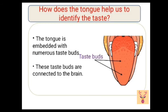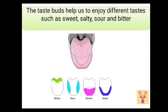How does the tongue help us to identify the taste? The tongue is embedded with numerous taste buds — numerous means many — and these taste buds are connected to the brain. Here you can see the tiny structures present on the surface of the tongue; that is the taste buds. The function of taste buds is to help us enjoy different tastes such as sweet, salty, sour and bitter, as you can see in the picture.